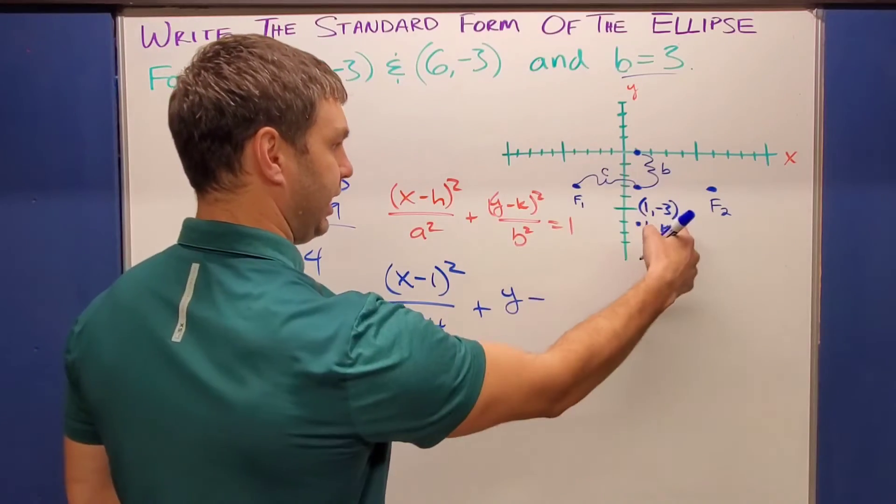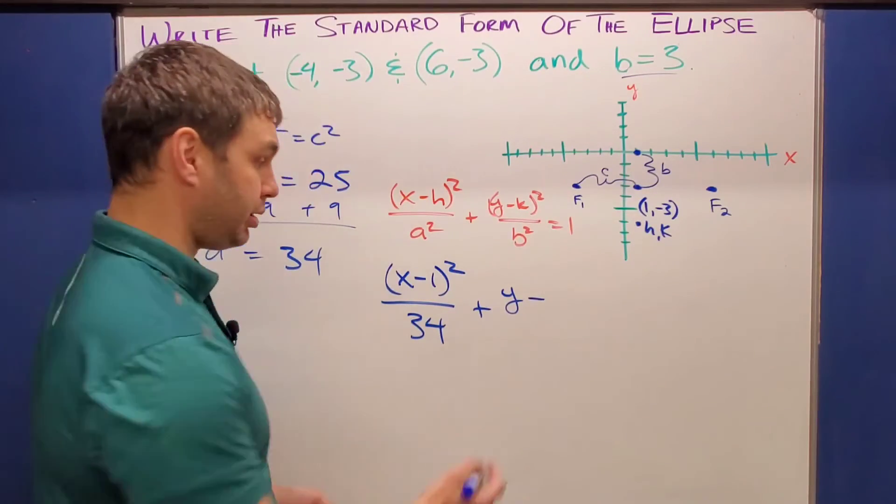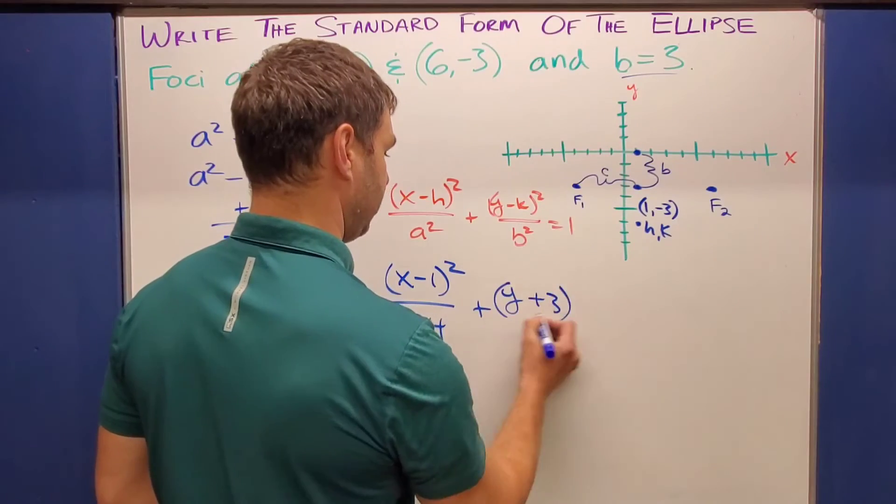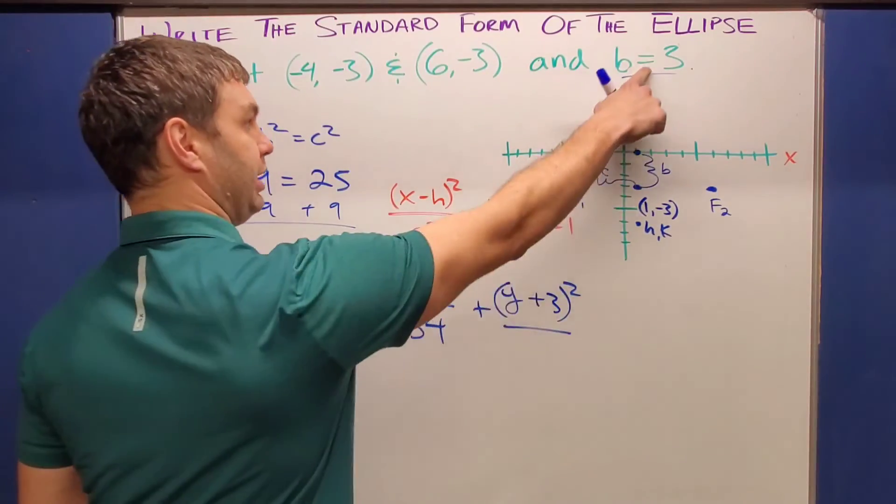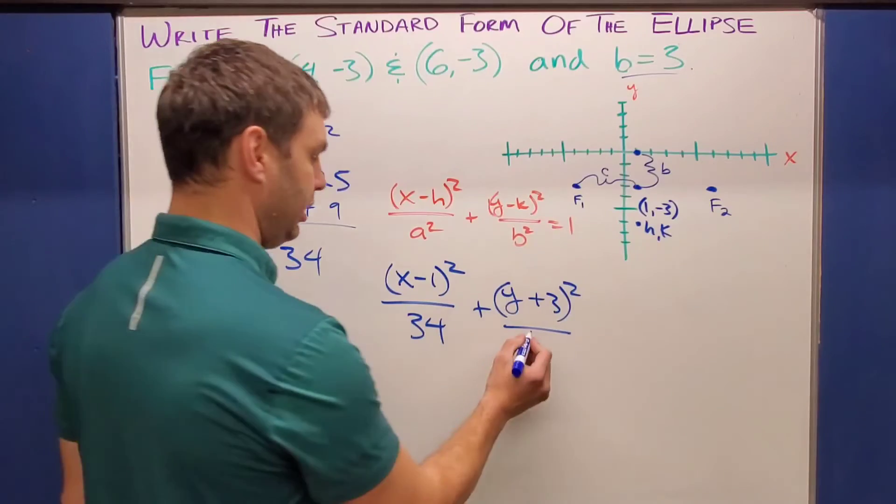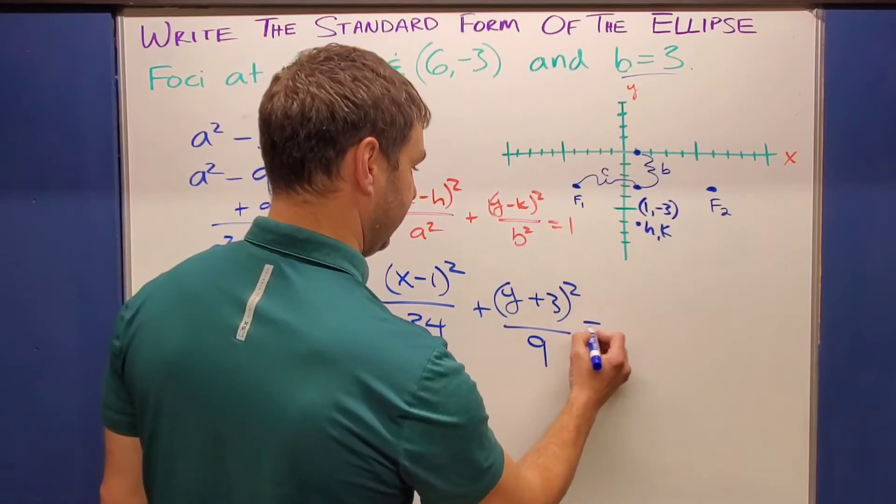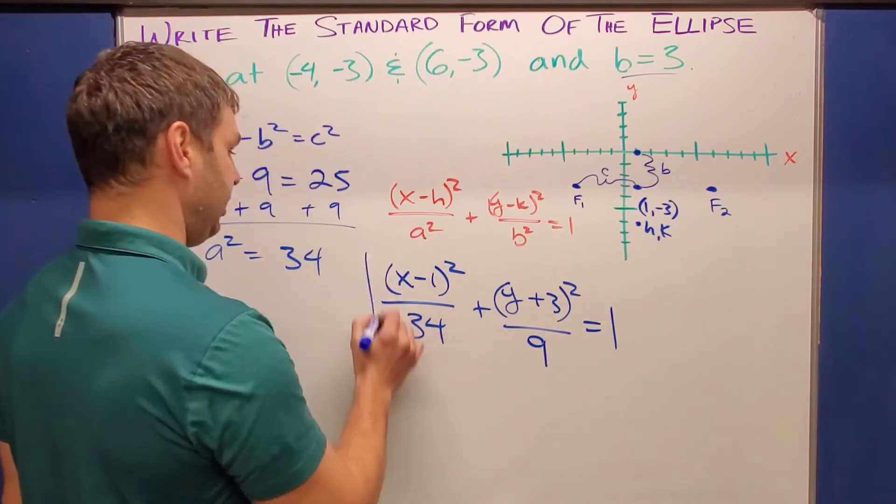and then Y minus the K, Y minus the negative three is Y plus three quantity squared over the B squared. Well again, B was three that was given to us in the directions. So over nine,